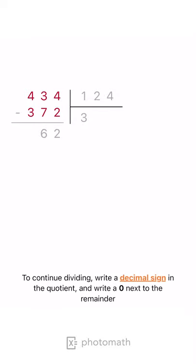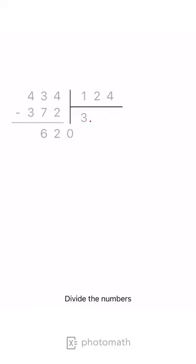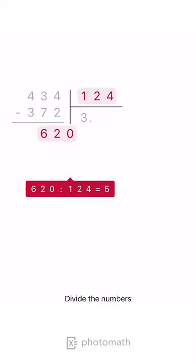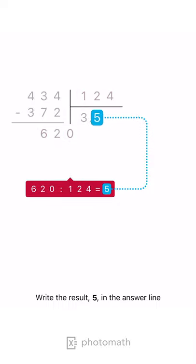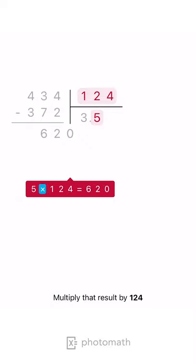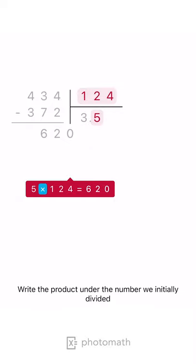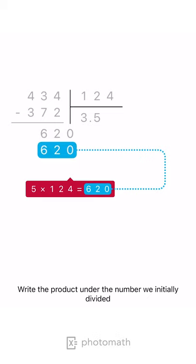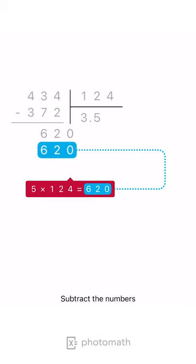To continue dividing, write a decimal sign in the quotient, and write a zero next to the remainder. Divide the numbers. Write the result, 5, in the answer line. Multiply that result by 124. Write the product under the number we initially divided. Subtract the numbers.